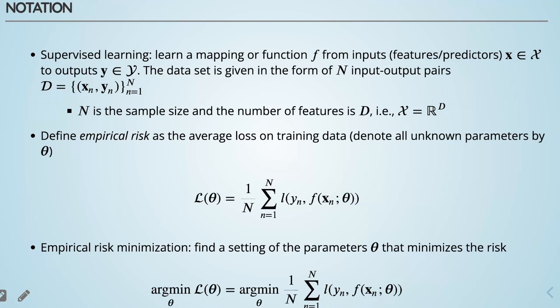In supervised learning, the main goal is to find a mapping or function F that allows us to connect inputs — which are features or predictors — to some outputs. The dataset is typically given in the form of input-output pairs shown using two-tuple notation: x_n are the inputs and the corresponding outputs y_n, where n goes from one to uppercase N, the total number of samples.